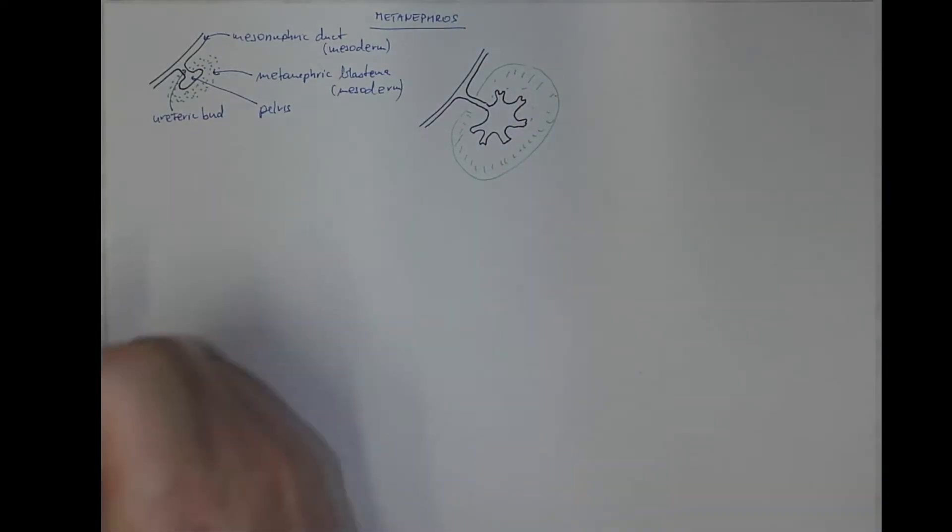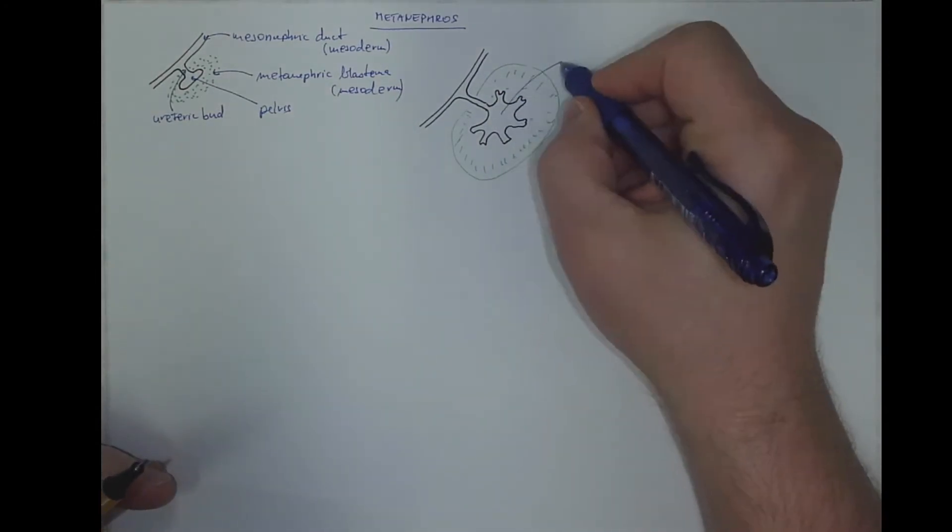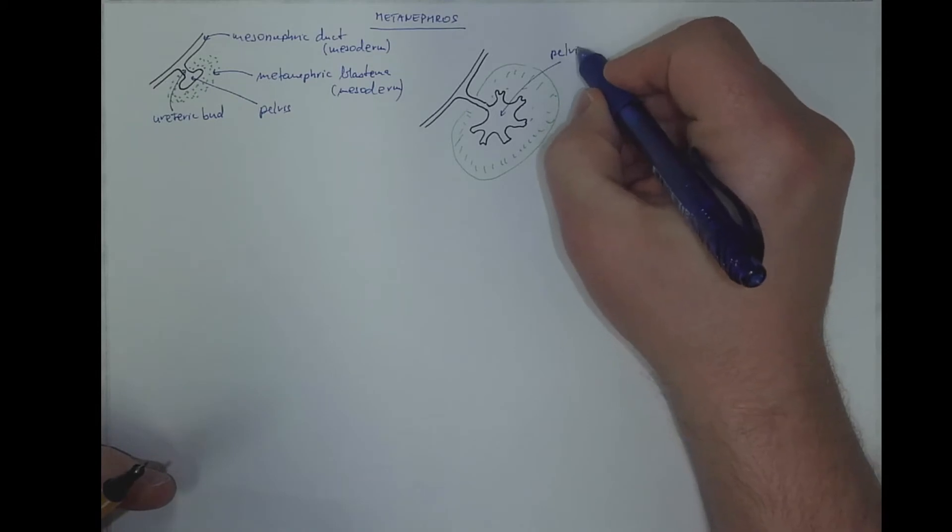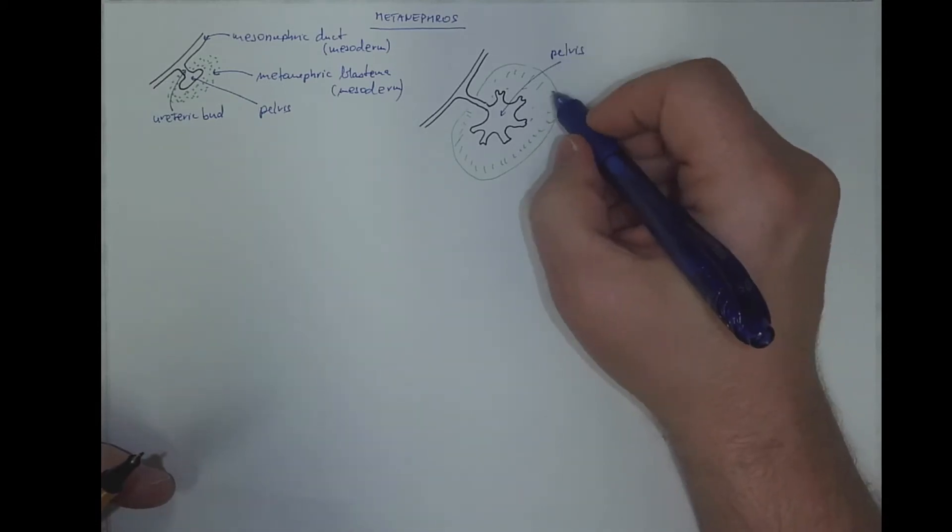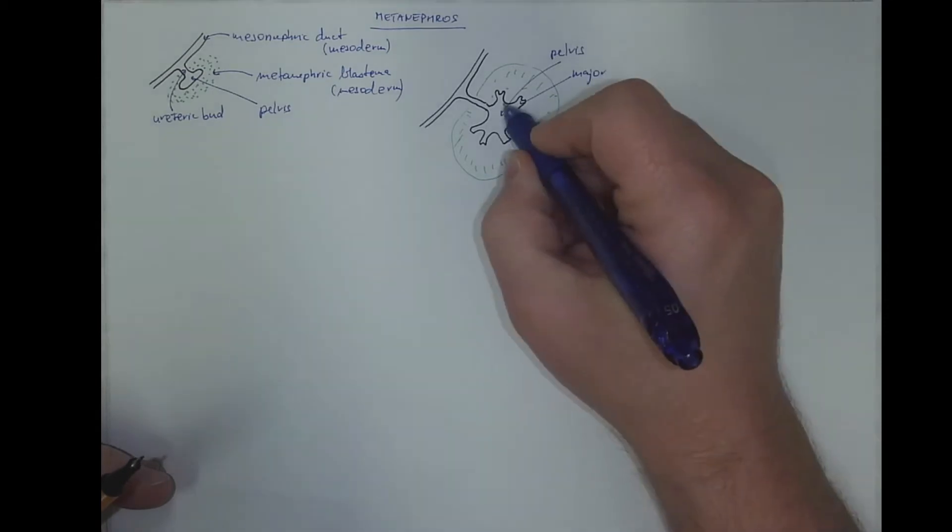So we got the pelvis, the major calyces, as the branches of the pelvis.